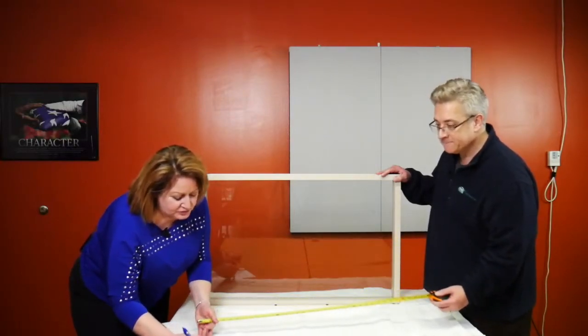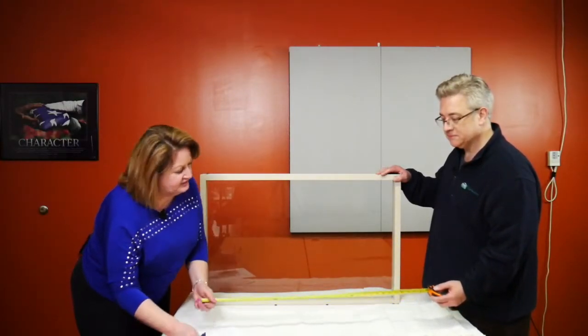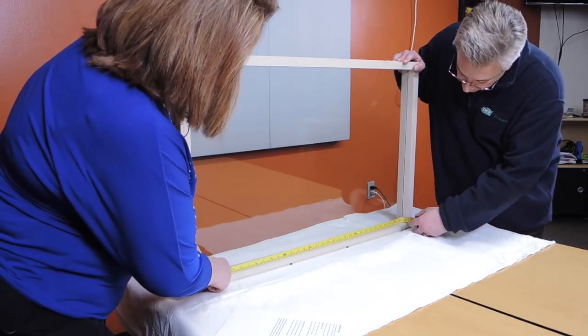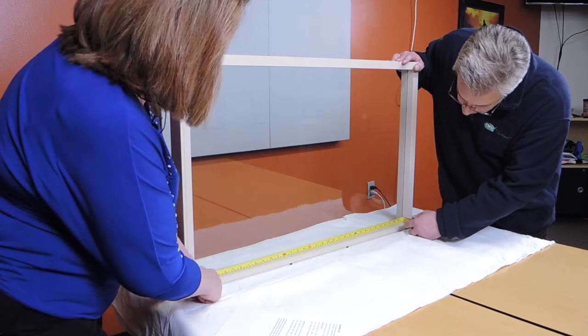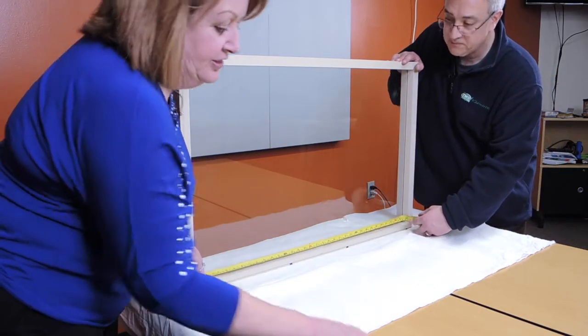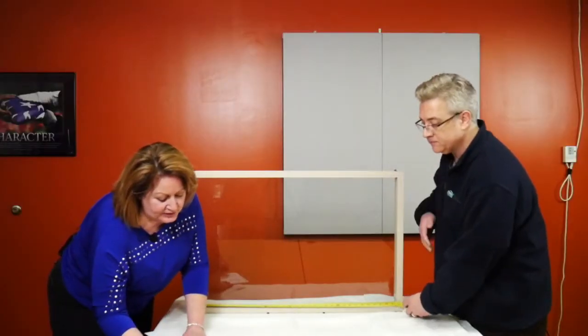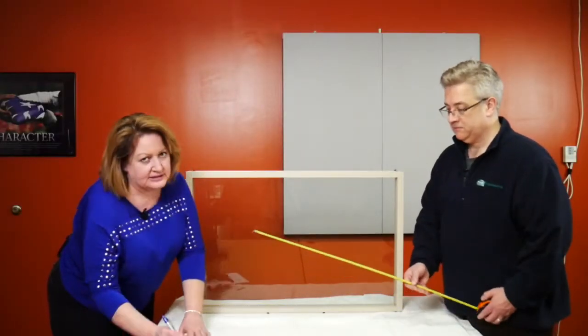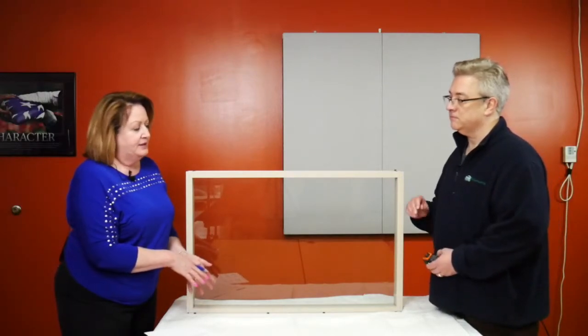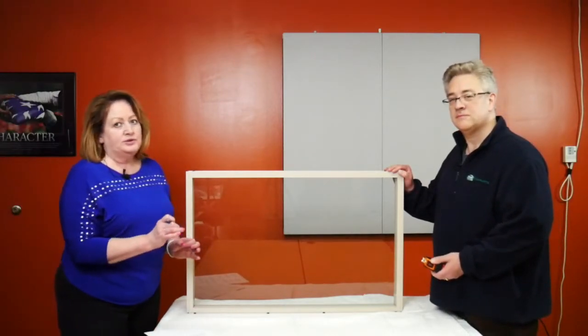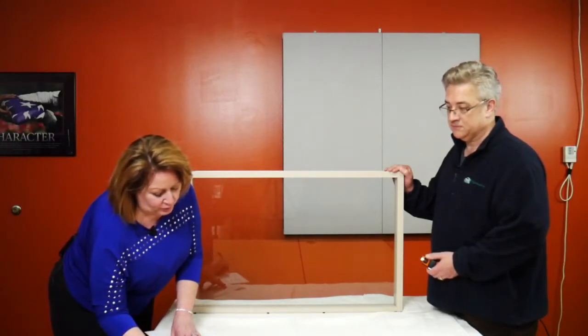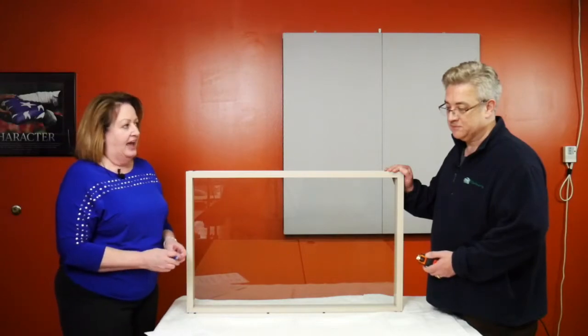Our final width measurement is across the bottom. This one is actually 33 and a half. So we know that our window isn't completely square - it's about a quarter inch off at the bottom. On our width measurement, we always want to take the smallest measurement. That was at the bottom, so we're going to put our width at 33 and a half.